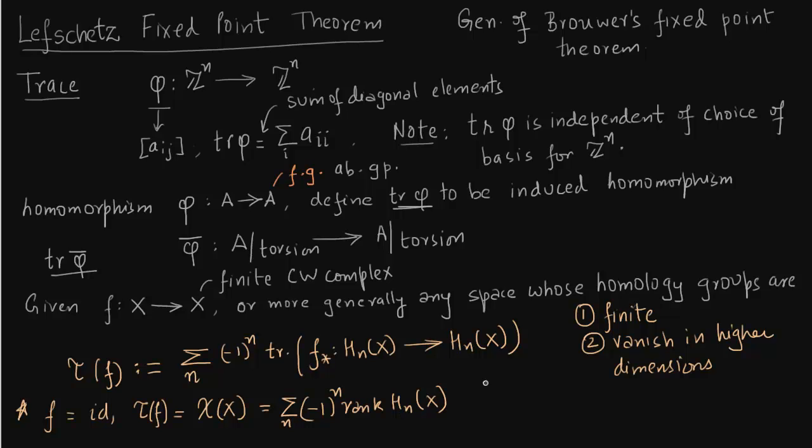Instead of trace, which is the part of Lefschetz number, we have written rank which is part of Euler characteristic. Why rank is equal to trace? Because f_star is nothing but the identity matrix. In this case, the trace will be precisely n, which is the rank of H_n(X). The trace and rank are equal because the trace of f_star is, as you can see, n, which is the rank of the homology group. Now this is obvious because it is just going from space X to X and it is just nothing but an identity map.